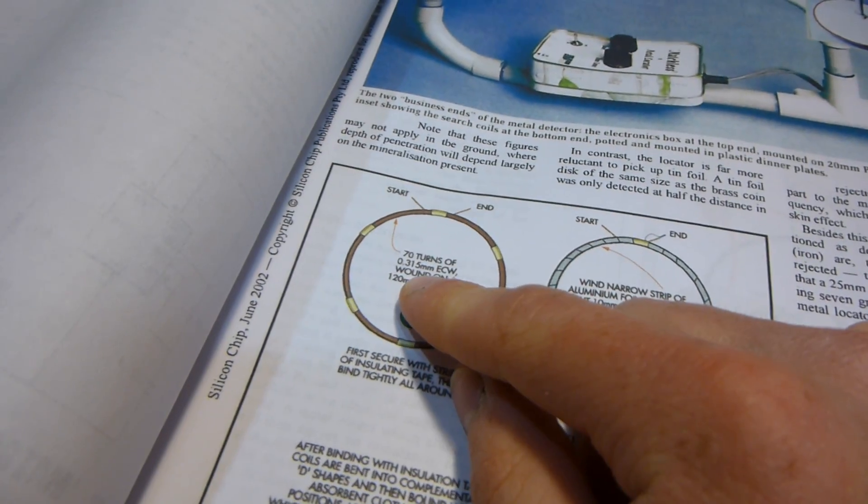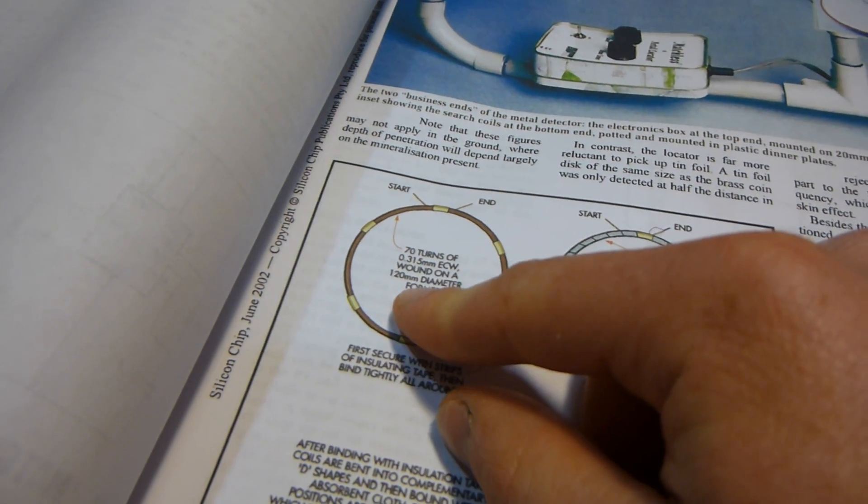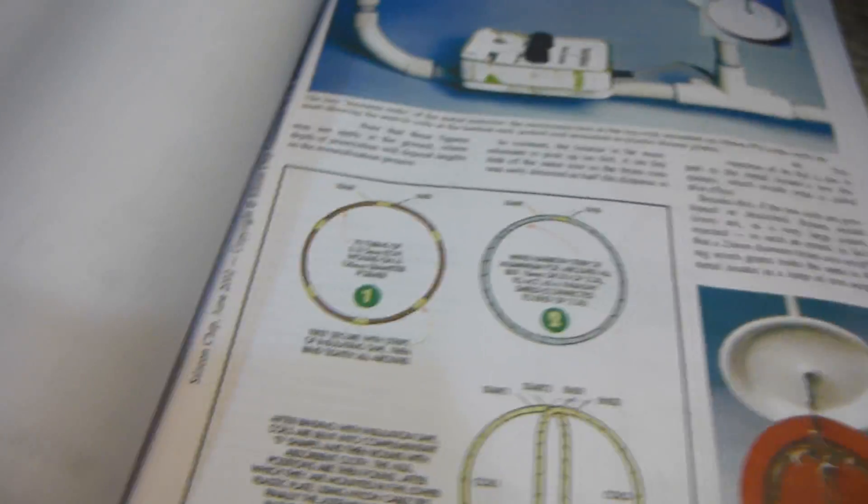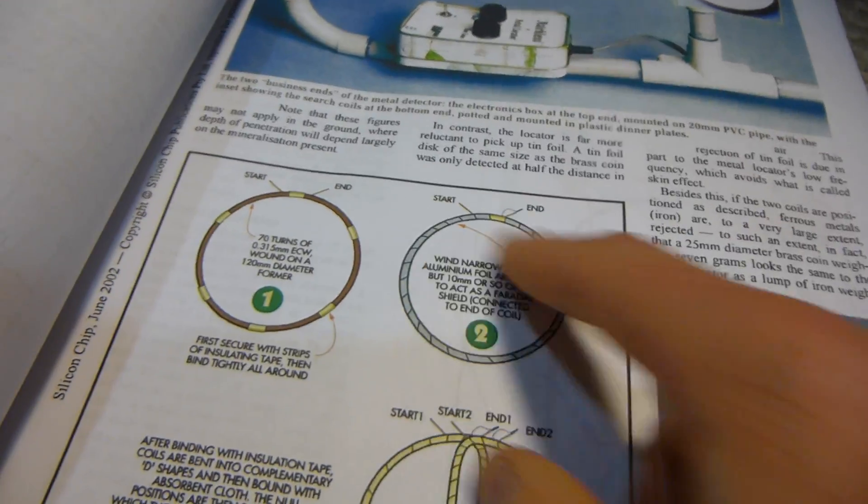And then the coil, so you've got two coils here, ones transmit, ones receive. They're both exactly the same. They are 70 turns of 28 gauge wire and wrapped on 120 millimeter form or 12 millimeter or 12 centimeter.